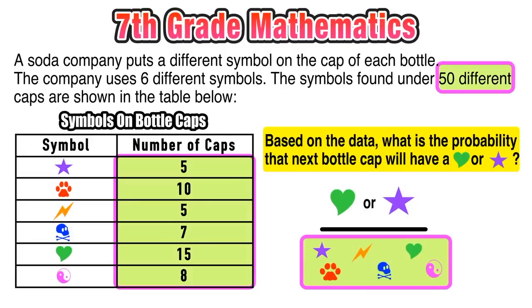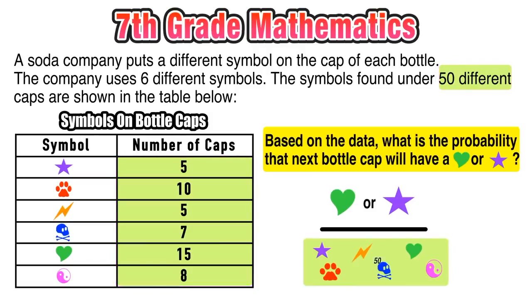Remember that the table shows 50 different caps. If you add up the occurrences for all six of those symbols, our total will be 50. So 50 is going to go in our denominator.